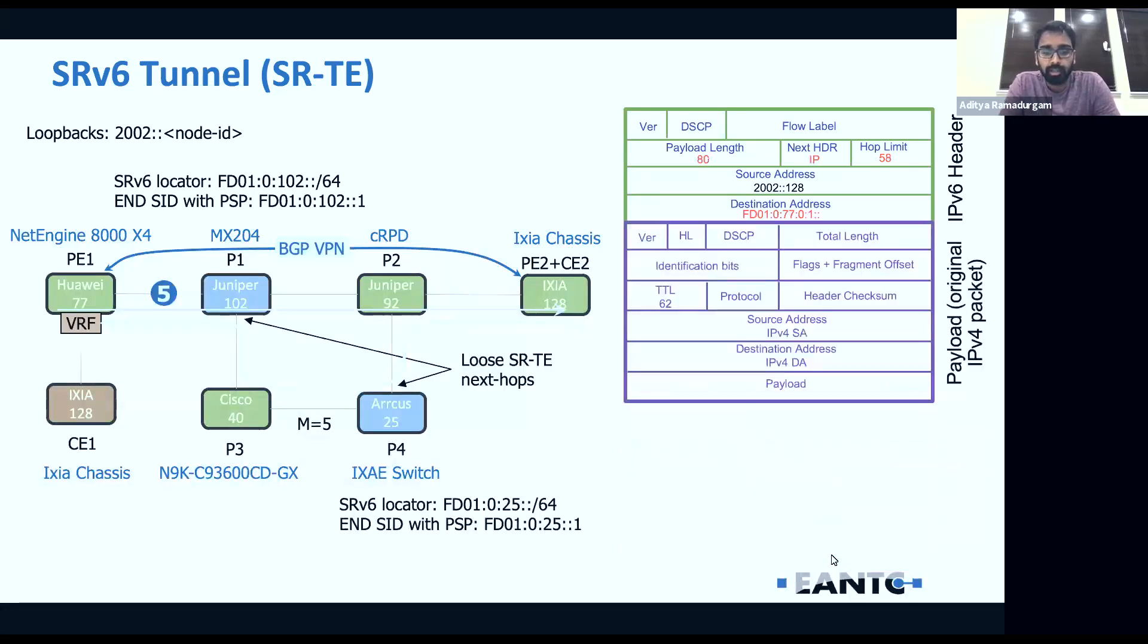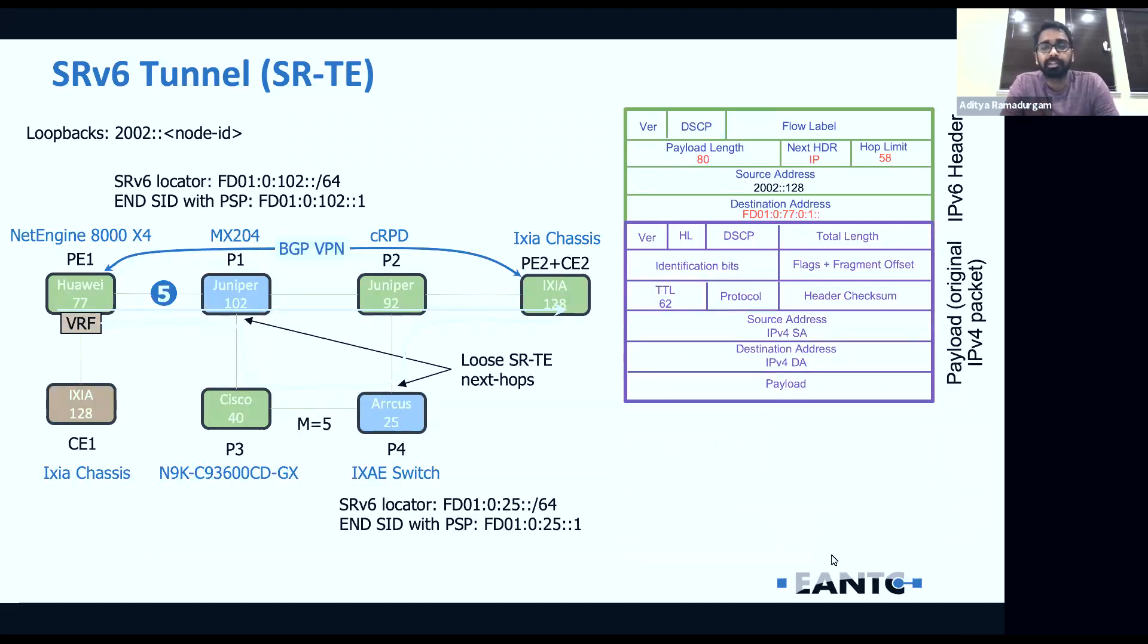When Juniper receives a packet, it also performs a specific end-SID functionality. As you can see on the right-hand side, the header has been shortened. When Juniper receives the packet, the first thing it does is decrement the segments left by one. So the segments remaining are going to become zero. If configured with PSP, which is penultimate segment popping, and in this case Juniper is configured with PSP, it will strip the SRH header and update the destination IP address with the innermost segment ID, which is Huawei's end DT4 SID. It's going to construct that new packet and forward it out to Huawei.